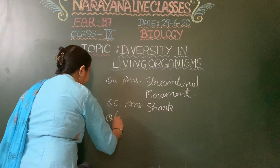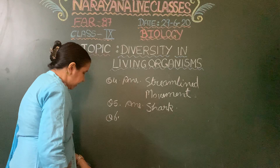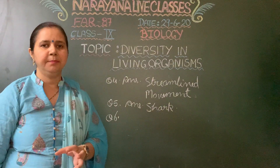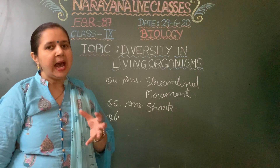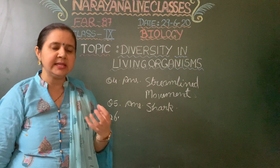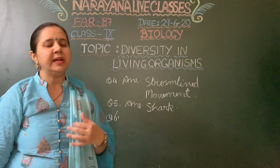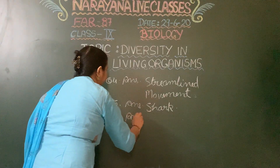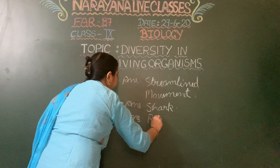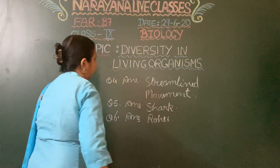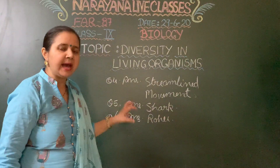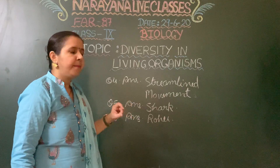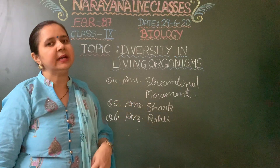Question number 6 asks about fishes with a skeleton made of both bone and cartilage. Just like the skeleton in our own body consists of both bones and cartilage, the answer is Rohu. Rohu is a very famous fish and has a skeleton made up of both bones and cartilage.